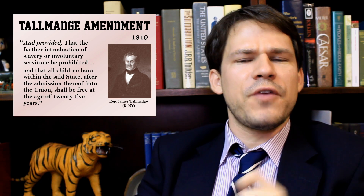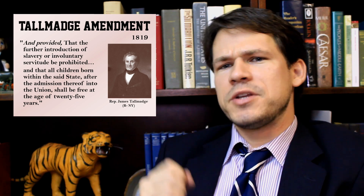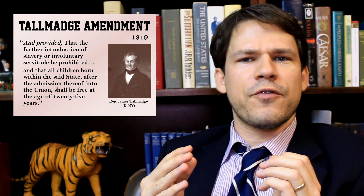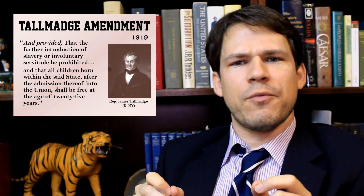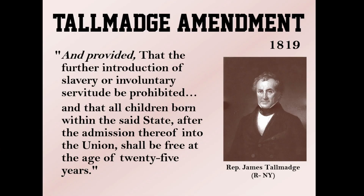Almost immediately we see opposition from Representative James Talmadge from New York, who proposed the Talmadge Amendment. What the Talmadge Amendment did was establish a system of gradual emancipation so that Missouri would eventually become a free state. It stated that the further introduction of slavery or involuntary servitude be prohibited, and that all children born within the state after its admission into the Union shall be free at the age of 25 years.